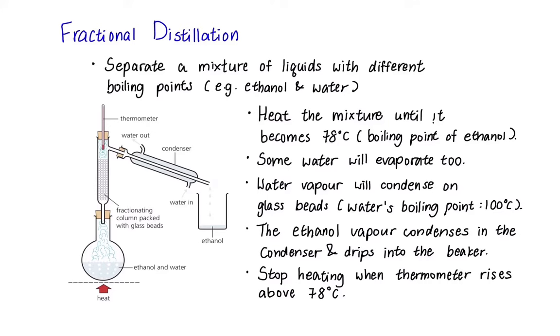So the process goes like this. Heat the flask containing ethanol and water until the thermometer reaches 78 degrees Celsius. The ethanol vapor will travel through the glass beads and to the condenser and just like simple distillation, it will collect in the beaker placed below the condenser. During this process, some water may evaporate as well but this will condense on glass beads, which are 78 degrees Celsius and drip back to the ethanol and water mixture. You can stop heating the flask when the thermometer reading rises above 78 degrees Celsius as it means all ethanol has been changed to ethanol vapor and have been collected in the beaker as liquid.